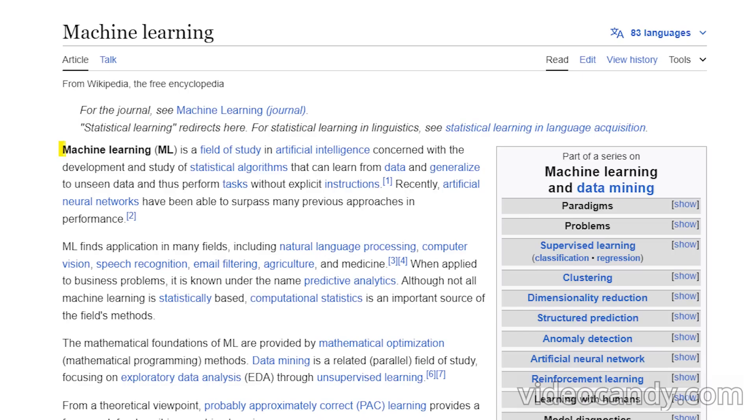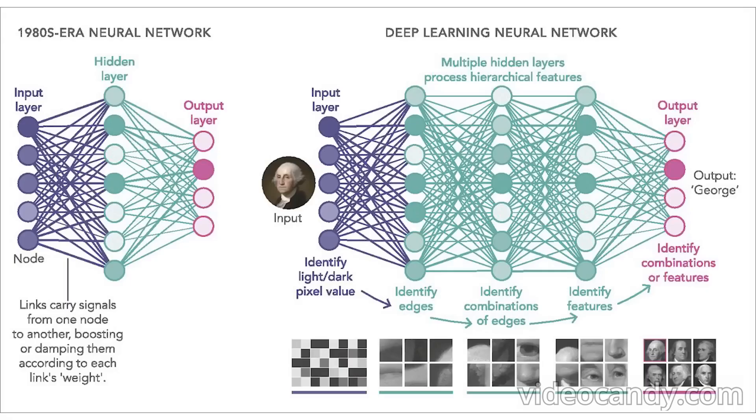According to Wikipedia, machine learning is a field of study in artificial intelligence concerned with the development and study of statistical algorithms that can learn from data and generalize to unseen data, and thus perform tasks without explicit instructions. Much of the recent advancements in AI are driven by neural networks, which I hope to give you an intuitive understanding of by the end of this video.